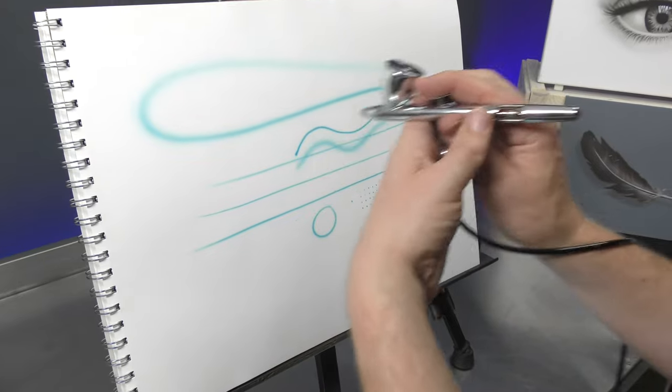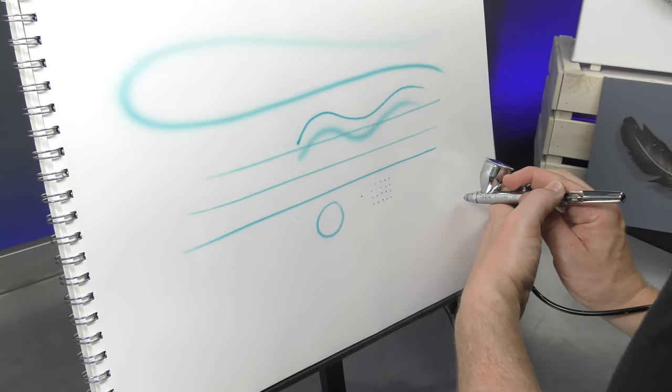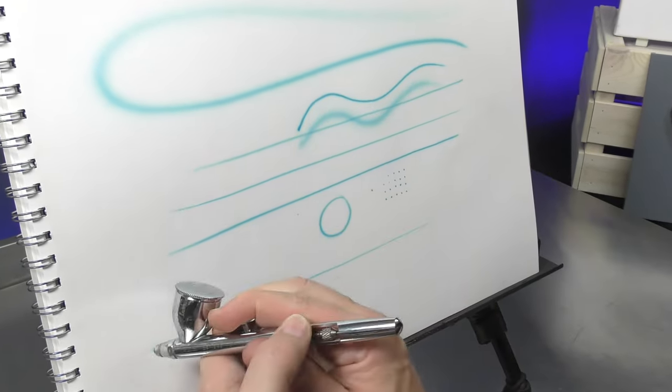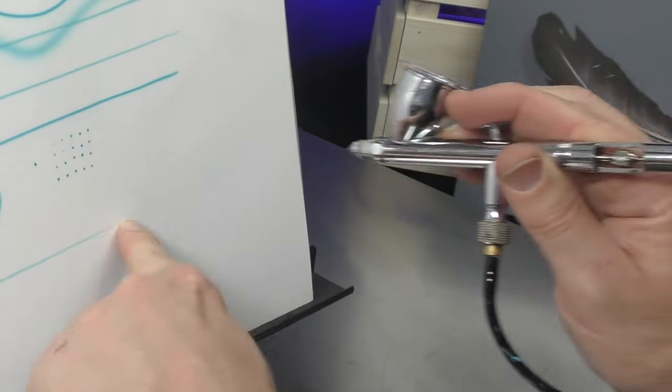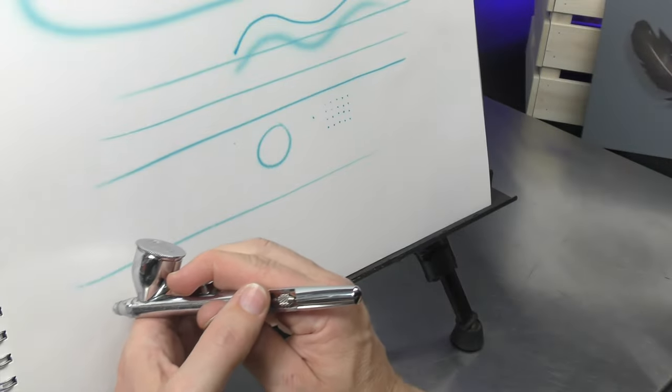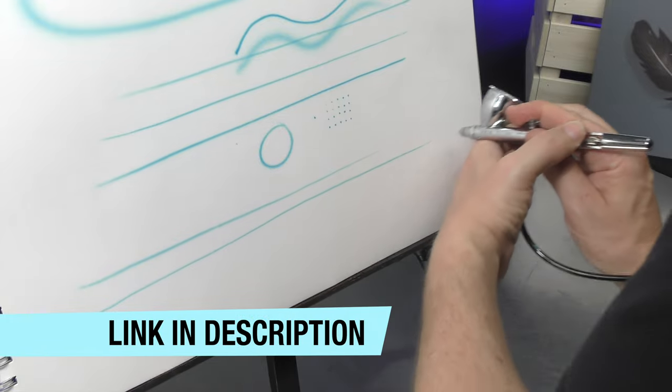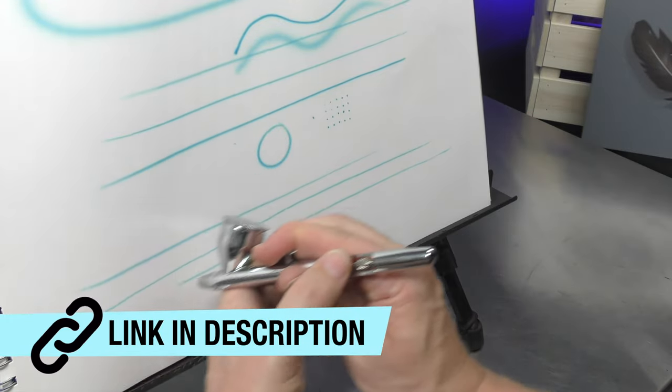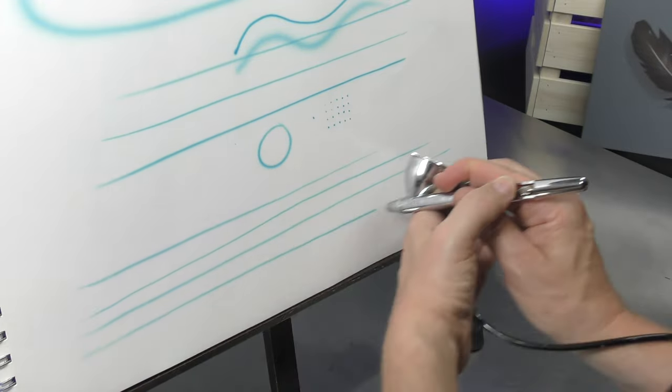So you can also use that double-handed tip if you want to run lines. You can see it tip dried a bit on me here. If you want to learn how to eliminate tip drying I'll pop a few links to videos in the description below.